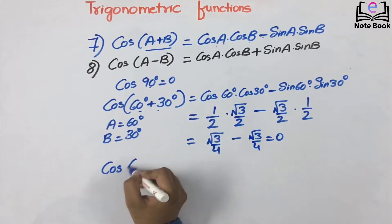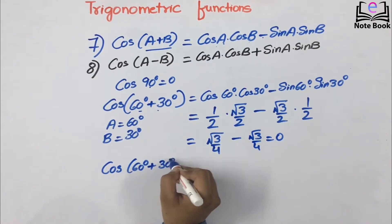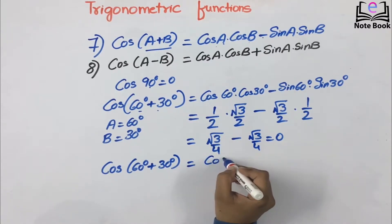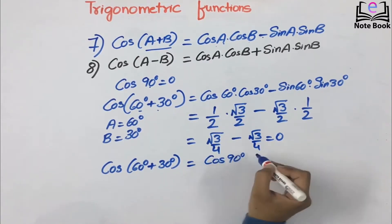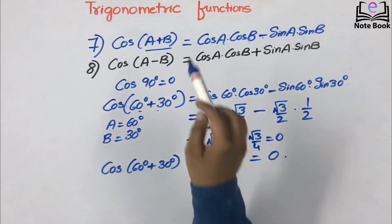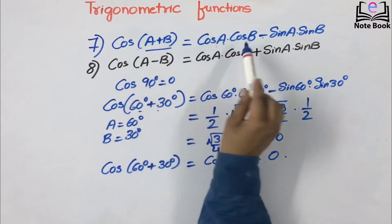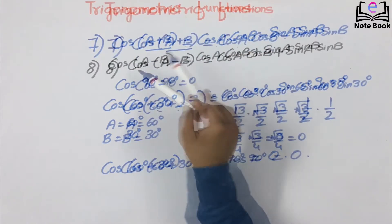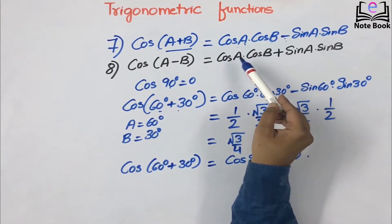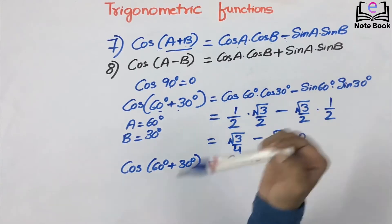So cos(60° + 30°) = cos 90° = 0, which is verified. Remember: whenever we add two angles in cosine, there will be a minus symbol in the middle. Whenever we subtract two angles in cosine — that is cos(a − b) — there will be a plus in the middle: cos a cos b + sin a sin b.